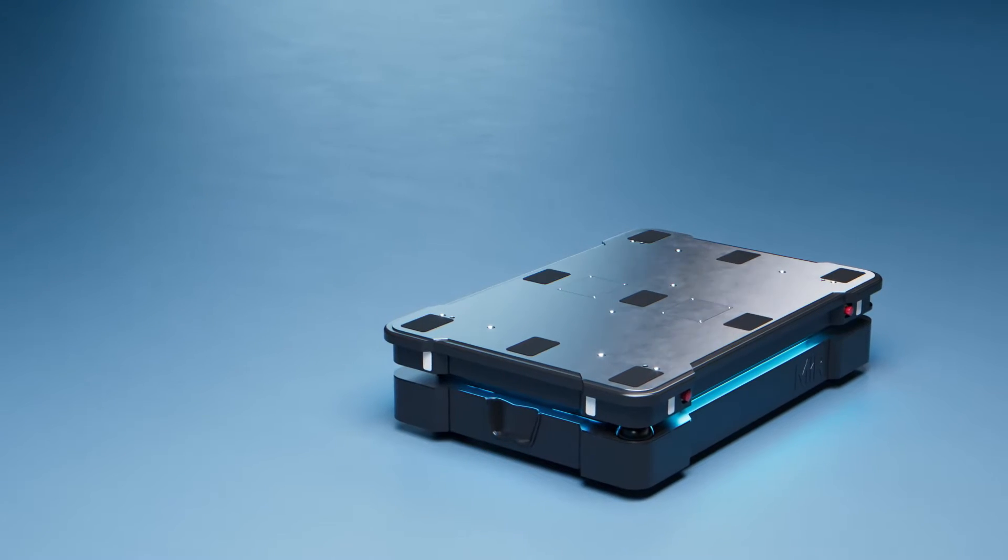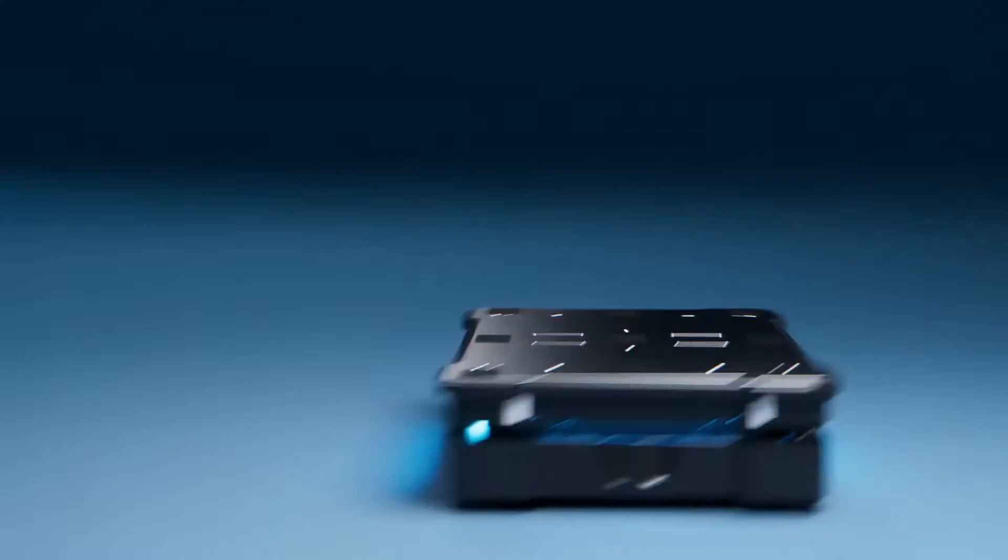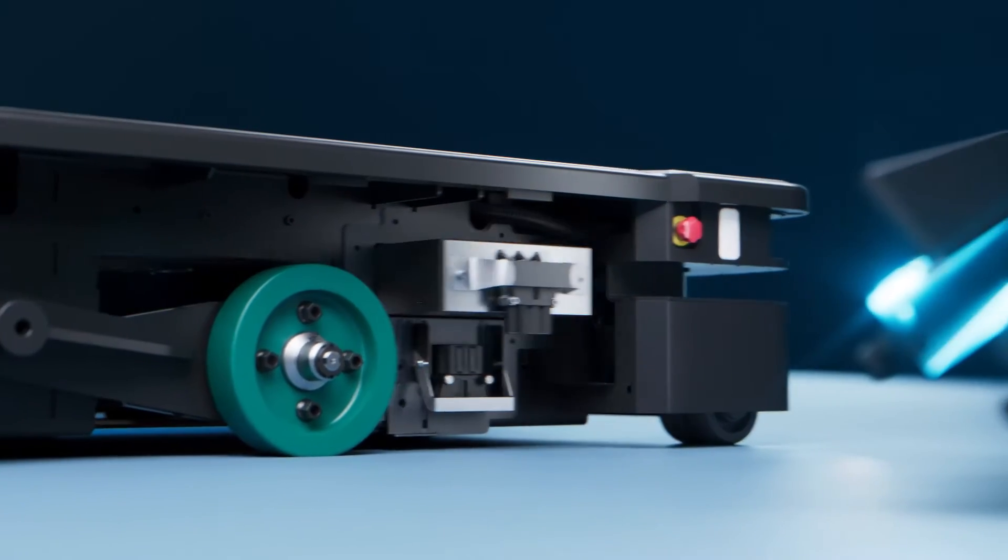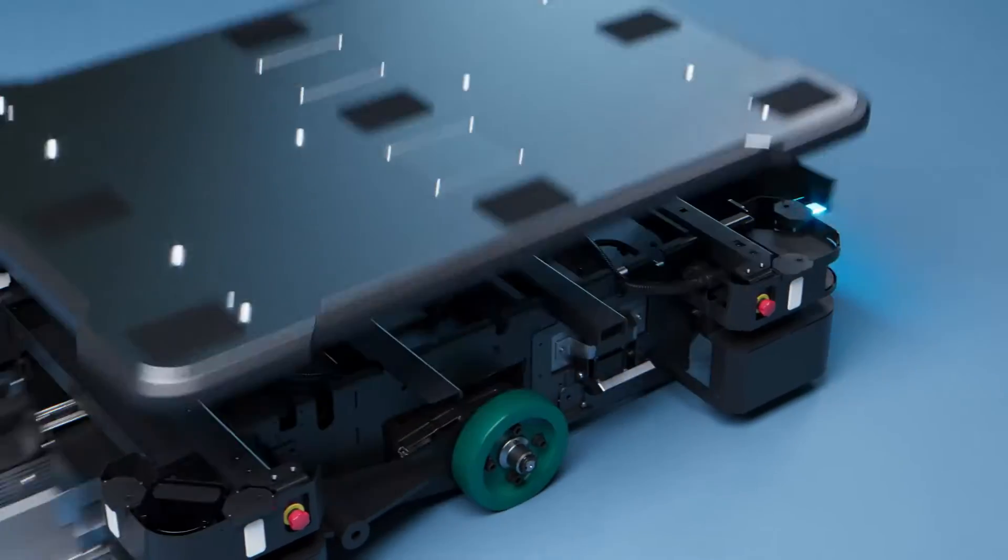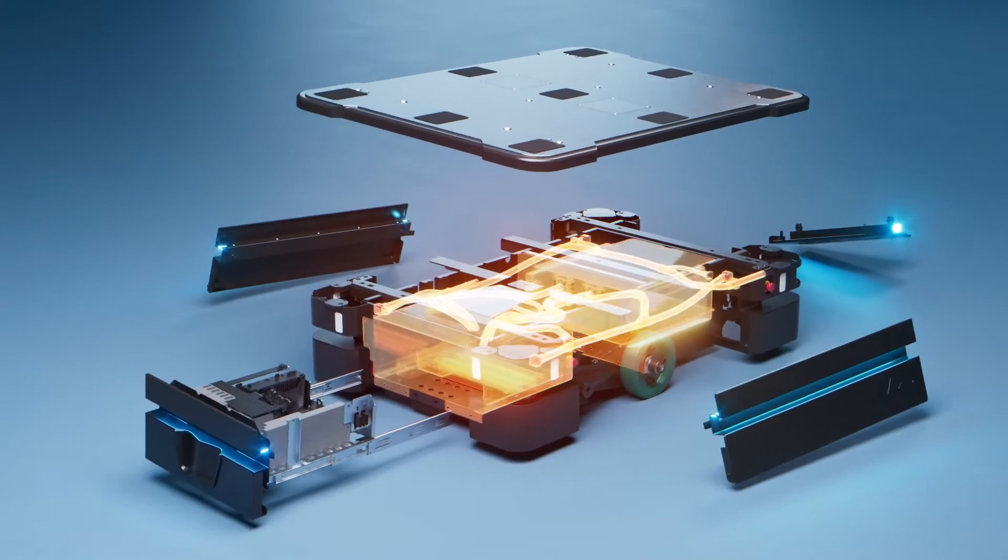The MiR 600 and MiR 1350 ensure minimal downtime with easy access for service. The robots are the first IP52-rated AMRs, protecting against dust and water drops.